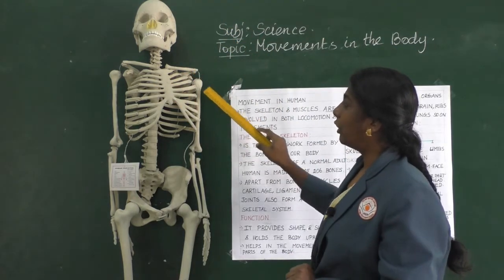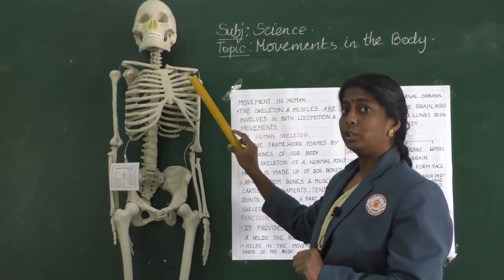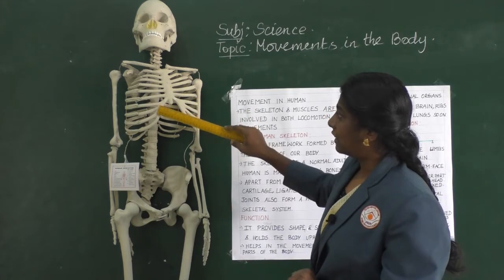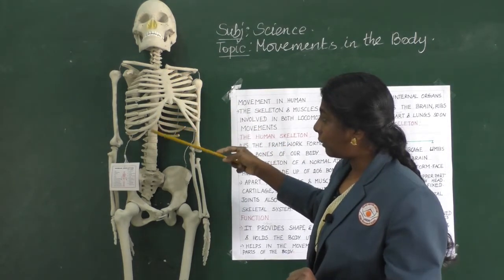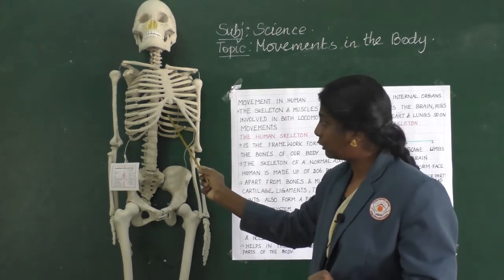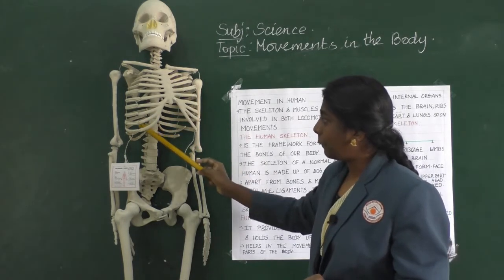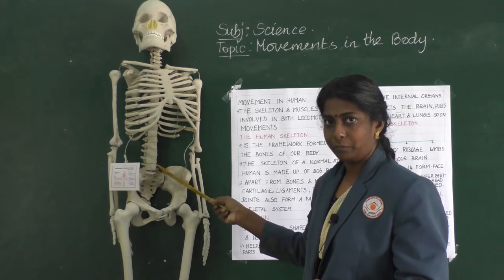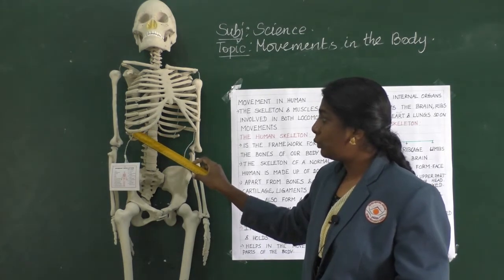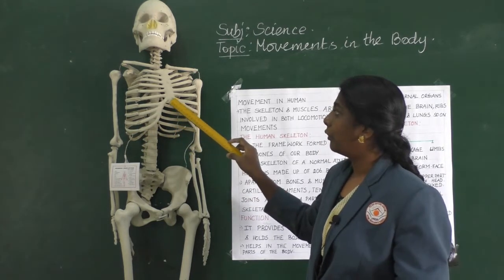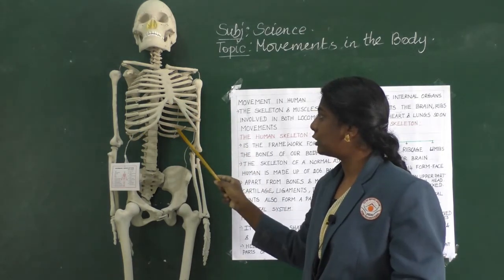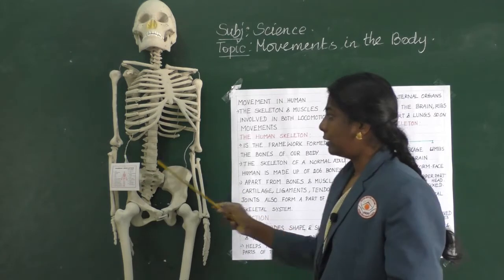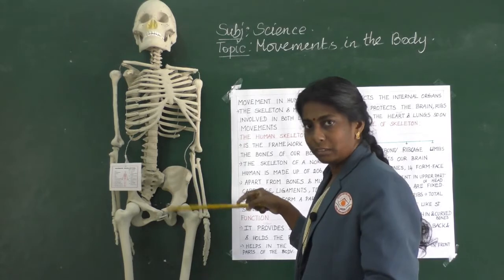The ribcage has a total of 12 pairs of bones. The front part is connected to the breastbone, and the back part is connected to the backbone. The last two ribs do not connect to the front bone — these are called floating ribs. The limbs consist of forelimbs (your hands) and hindlimbs (your legs).